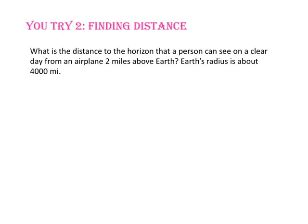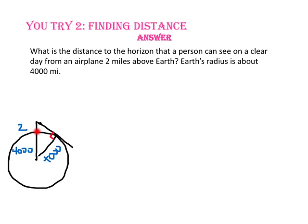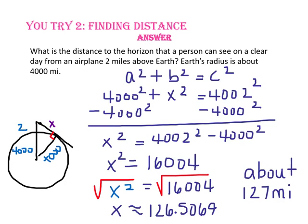Pause the video and do you-try number 2. What is the distance to the horizon that a person can see on a clear day from an airplane 2 miles above Earth? Earth's radius is about 4,000 miles. In the drawing, we have the distance the plane is above Earth — 2 miles — and Earth's radius of 4,000 miles. We have a tangent line from the plane to the horizon, and a second radius perpendicular at the point of tangency, also 4,000 miles. We have created a right triangle with one leg 4,000 and the hypotenuse 4,002. Using the Pythagorean theorem, the distance from the plane to the horizon is about 127 miles.